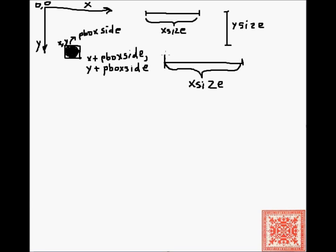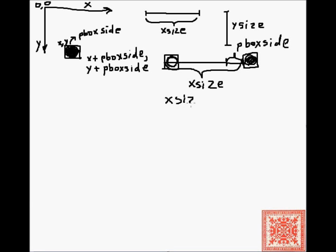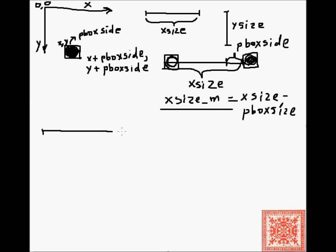When we draw a point near the left margin, it's not a problem because the left margin is at zero. However, if we draw a point on the right margin, we may have a situation where the point simply disappears because the box is outside of the canvas. So we have to allow for this case and subtract the value of p-box-size from x-size. We'll call this new value x-size_m (x-size modified), equal to x-size minus p-box-size.